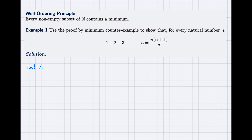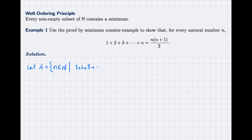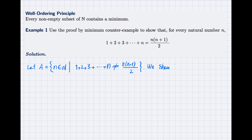So the idea is this. Let A be the set consisting of all natural numbers n such that they violate this equality — that is, 1 + 2 + 3 + ⋯ + n is not equal to n(n+1)/2. We define a set containing elements violating this rule, and then we want to show that this set is actually the empty set.